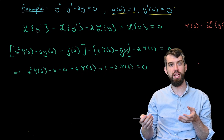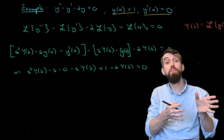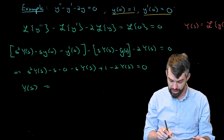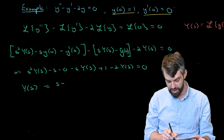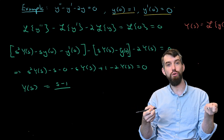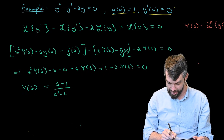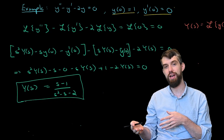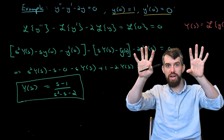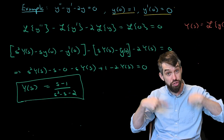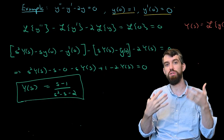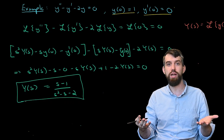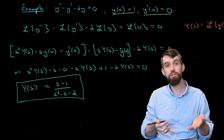This is now an algebraic equation in Y(s) and s. I solve for Y(s) by moving everything else to the right-hand side: the −s becomes +s, and the +1 becomes −1. Then I divide by the coefficients of Y(s), which are s² − s − 2. So Y(s) = (s − 1) / (s² − s − 2). To find the inverse Laplace transform of this, I need to recognize it in terms of known transforms, and the main tool is partial fractions.